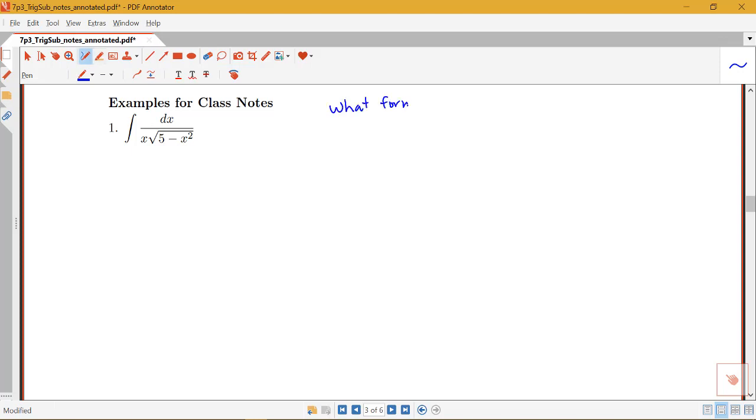So this is always a good way to start a trig sub question. Is it the x squared minus a squared, the a squared minus x squared, or the a squared plus x squared type form? Well, here I do have a number squared minus a variable thing squared, so that puts us in the a squared minus x squared form.